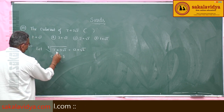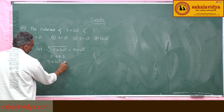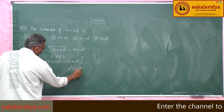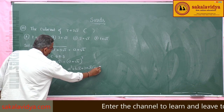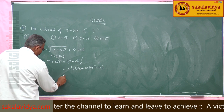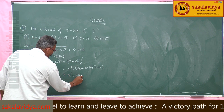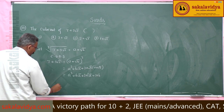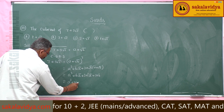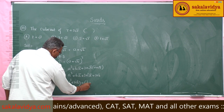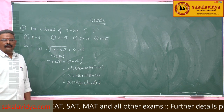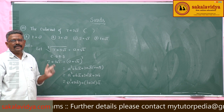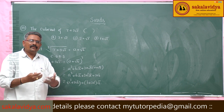Cubing on both sides we get 7 plus 5 root 2 is equal to (a plus root b) cubed. We know this expands to a cube plus b root b plus 3a root b into (a plus root b), giving us a cube plus 3ab plus root b times (b plus 3a squared). Now, rational and irrational parts are identified. Comparing both sides — rational and irrational — that is the traditional or conventional method which we follow.